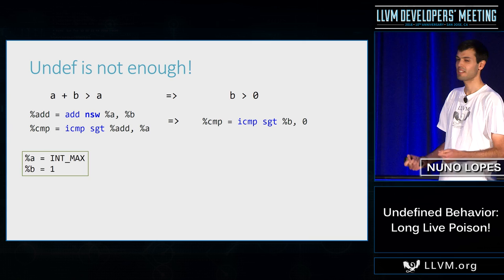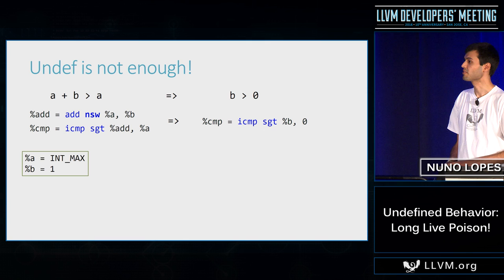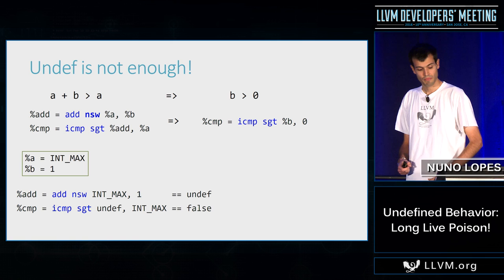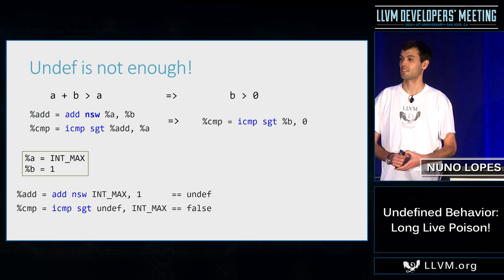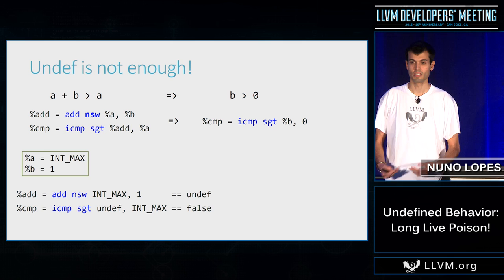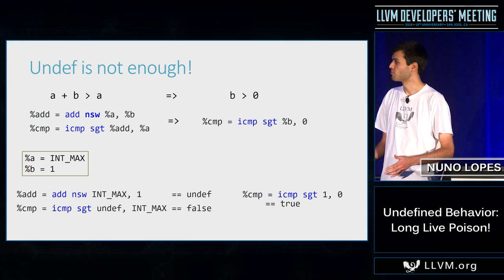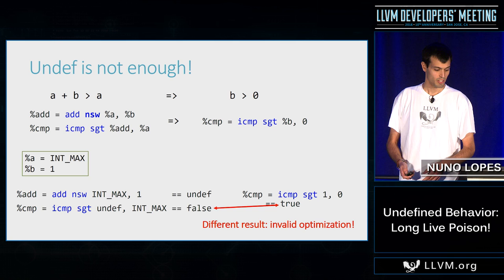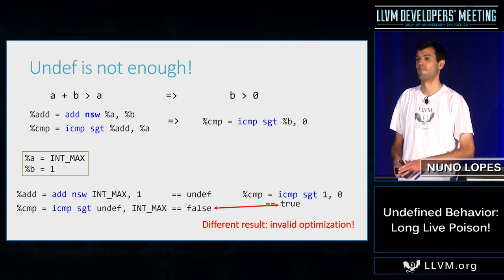Consider the case where A is INT_MAX and B is one. A plus B will overflow, so let's assume we get undef. We then evaluate 'undef greater than INT_MAX' — but by definition, there's no integer greater than INT_MAX, so the comparison is always false. On the right-hand side, B is one, which is greater than zero, so that's true. We now have different results before and after optimization, so this transformation is actually wrong.